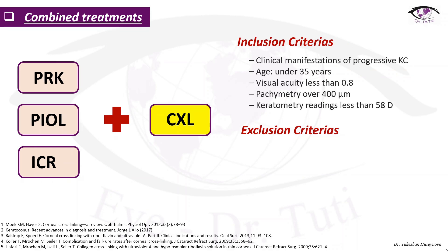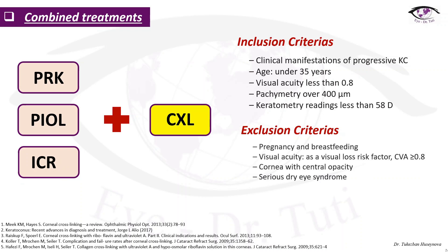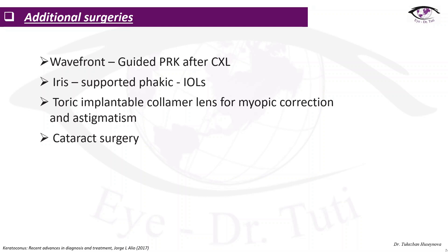Inclusion criteria for combined treatment are: clinical manifestation of progressive keratoconus, age under 35 years, visual acuity less than 0.8, pachymetry over 400 microns, and keratometry readings less than 58 diopters. Exclusion criteria are: pregnancy and breastfeeding, visual acuity equal to or more than 0.8, cornea with central opacity, and serious dry eye syndrome. Additional surgeries include wavefront-guided PRK after cross-linking, iris-supported phakic IOLs, toric implantable collamer lens for myopic correction and astigmatism, and cataract surgery with possible toric lens implantation.